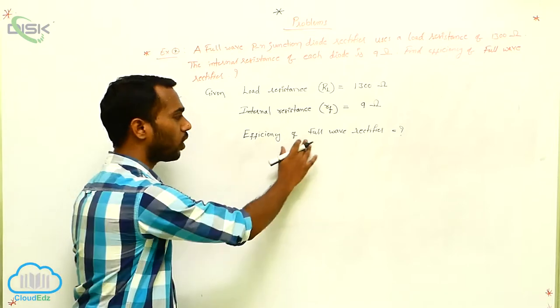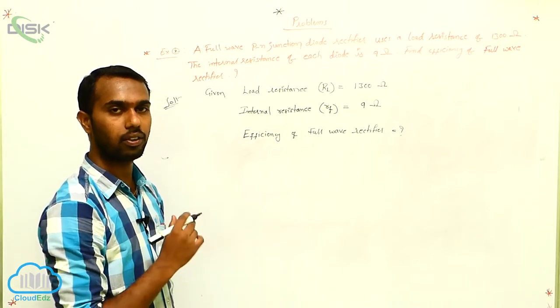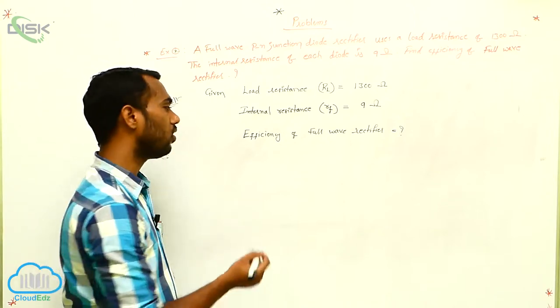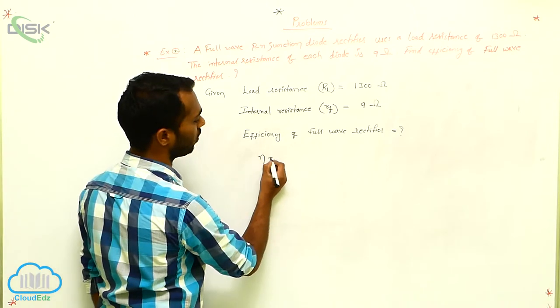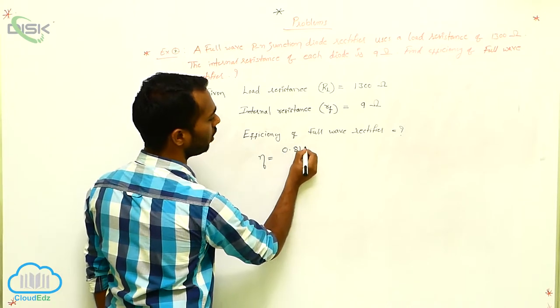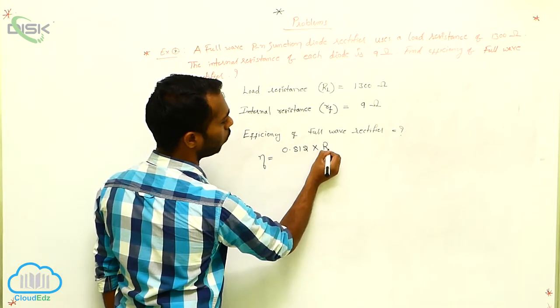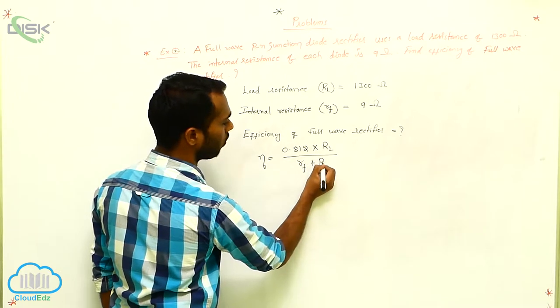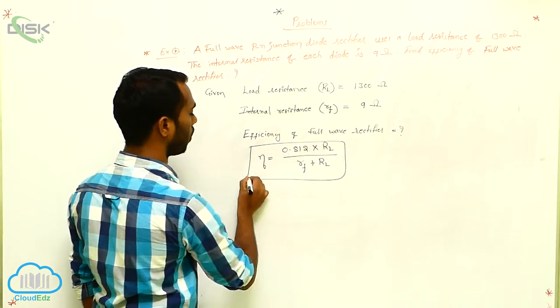For full wave rectifier, what is the efficiency formula? Efficiency eta for full wave rectifier is equals to 0.812 into RL by RF plus RL. This is our formula.